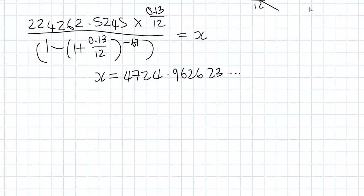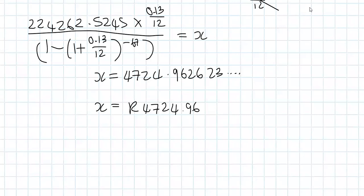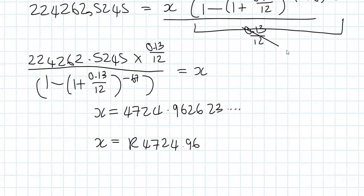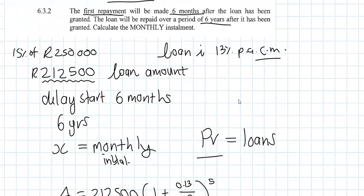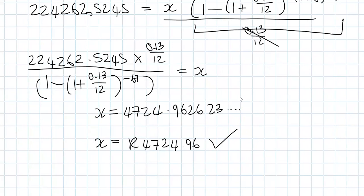So x is equal to 4,724.96 rand. These are the monthly installments. The question asked to calculate the monthly installment — that's our answer. That concludes Question 6.